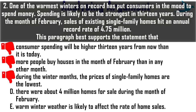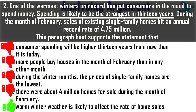Option D: 'There were about 4 million homes for sale during the month of February.' This is unwanted statistics relying on prediction — the passage says 4.75 million homes were sold at a record rate, not that 4 million homes were about to be sold. Option E: 'Warm winter weather is likely to affect the rate of home sales.' This is the best match — it talks about warm winter weather and its effect on the rate of home sales, mirroring the impact phrase 'likely to be the strongest.' So Option E is the correct answer.